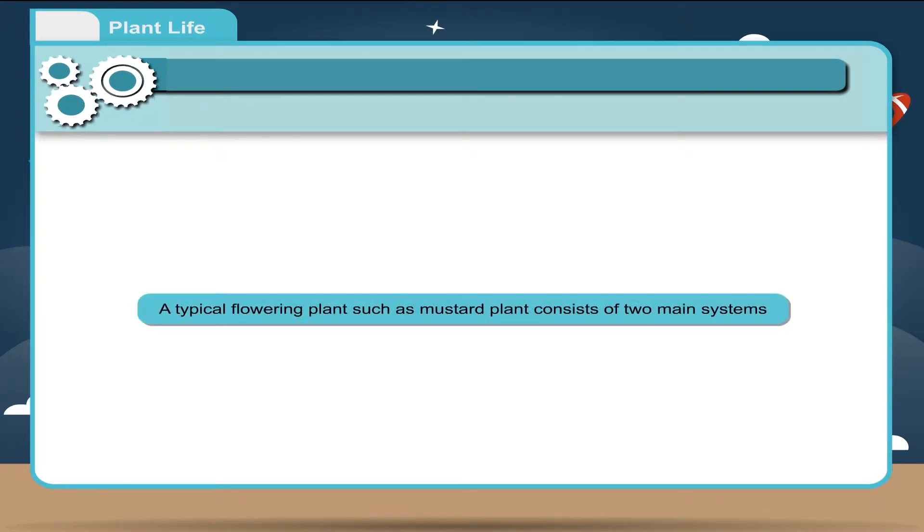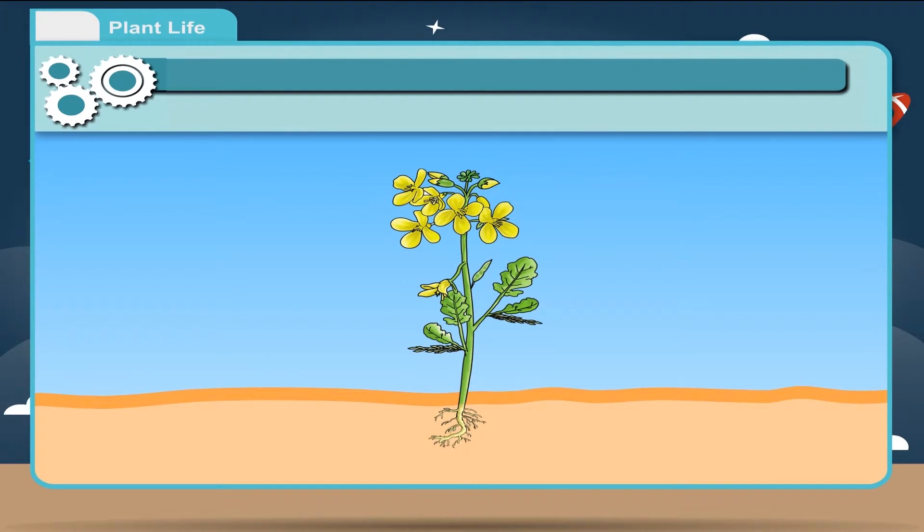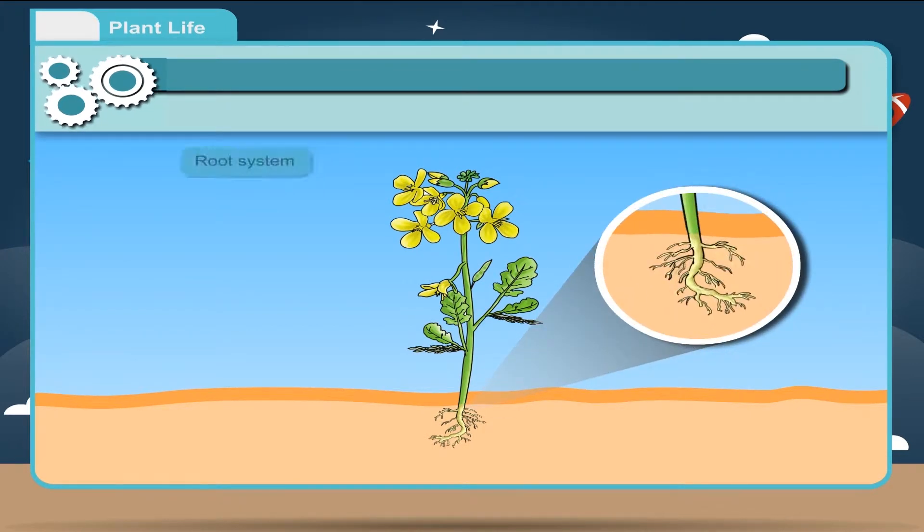A typical flowering plant such as mustard plant consists of two main systems. A system below the soil is called the root system and it consists of the main root, secondary root and root hairs.